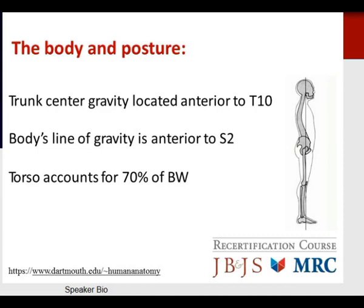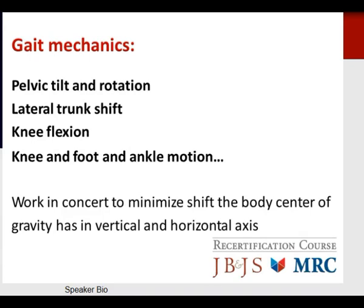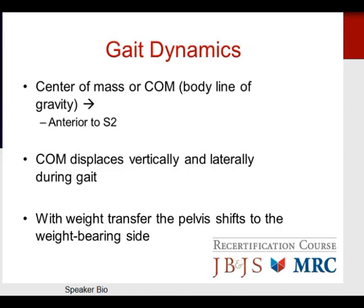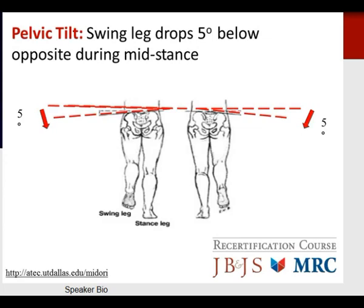The trunk center of gravity is located anterior to T10, and the body's line of gravity is anterior to S2. The torso and majority of adults represent 70% of body weight during gait. Gait mechanics involve pelvic tilt and rotation, lateral trunk shift, knee flexion, and knee, foot, and ankle motion working in concert to minimize the shift of the body's center of gravity in vertical and horizontal axes.